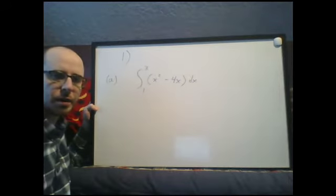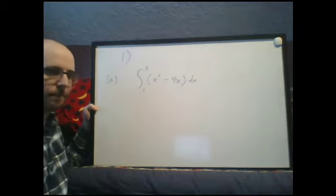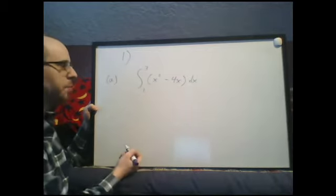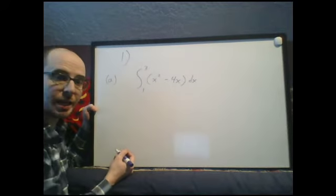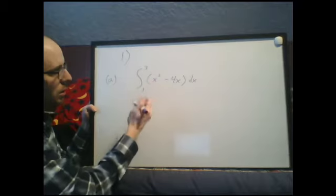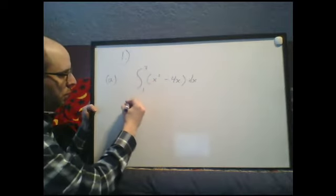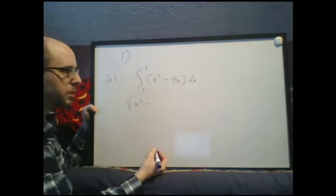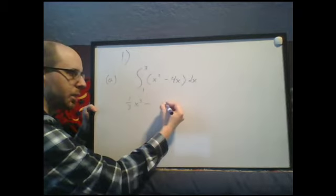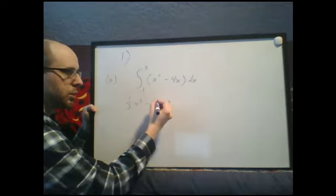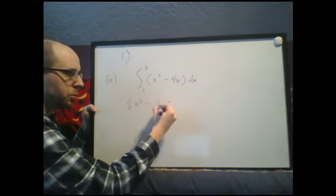Here we're integrating a few functions, these are definite integrals. We've got the x values, our first step though is to take an anti-derivative. So x squared, the anti-derivative of that would be one-third x cubed, and then minus 4x. x becomes x squared but then we have to divide by 2, so it becomes 4 divided by 2, so minus 2x squared.